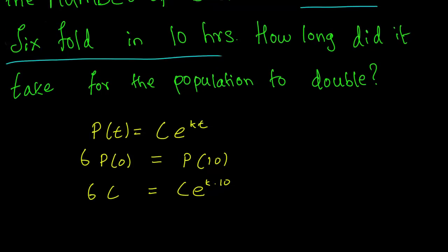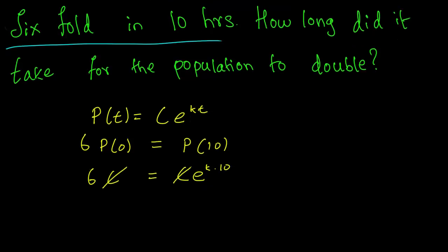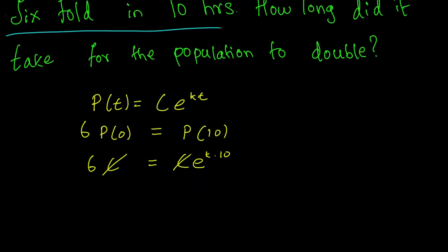The immediate thing is that we can just cancel off the Cs. Now there is something to think about is whether the C is equal to 0 or not. But you can pretty easily see that if C is equal to 0, the problem becomes pretty meaningless. So we can just cancel off the Cs. And we have just 6 equals e to the K times 10.